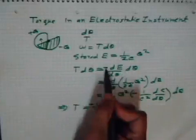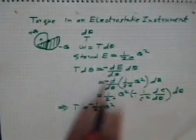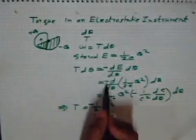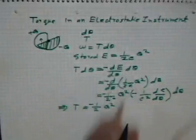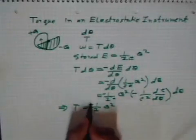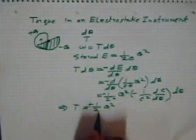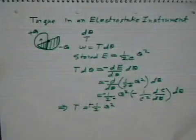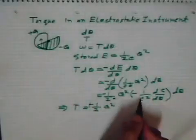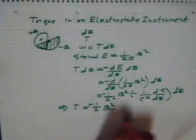So work done is equal to the decrease of energy, not equal to the increase of energy. A minus should be there, and this minus cancels. So I have half Q², and then 1/C², then dC/dθ.